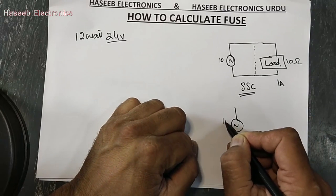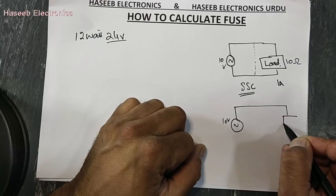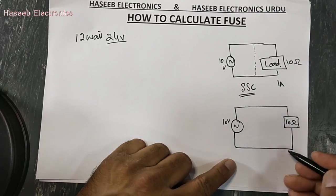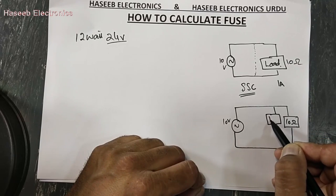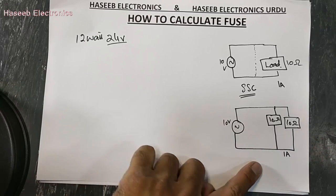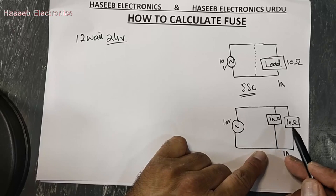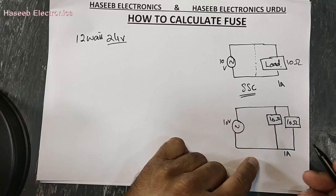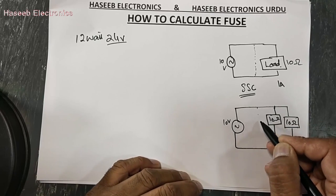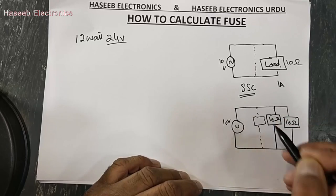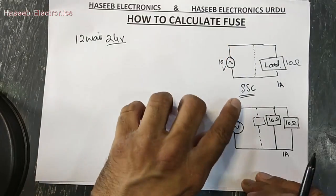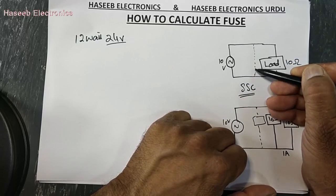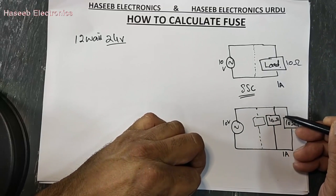Then we have another condition: we have 10 volt and a 10 ohm load — ideal condition providing 1 amp. But if you put another 10 ohm load in parallel, the total resistance drops to about 5 ohm, so the system will draw 2 amp. This is called overload. In a short circuit the load is bypassed, so the current selects the lowest path; in overload the current divides into different parts.